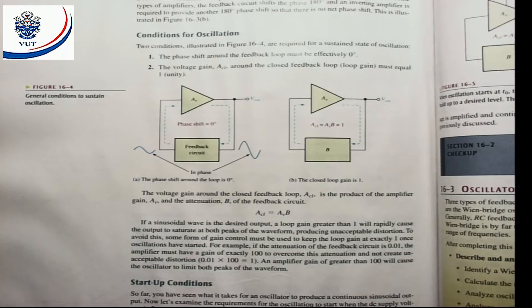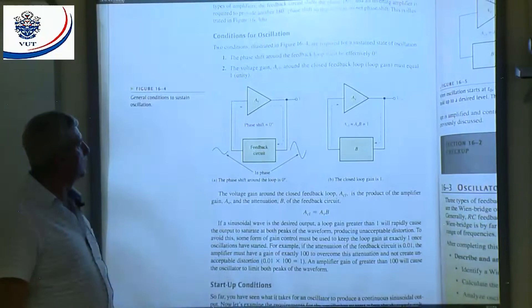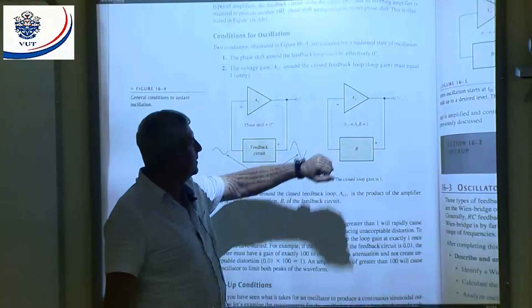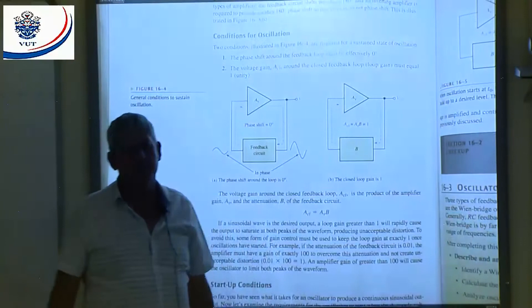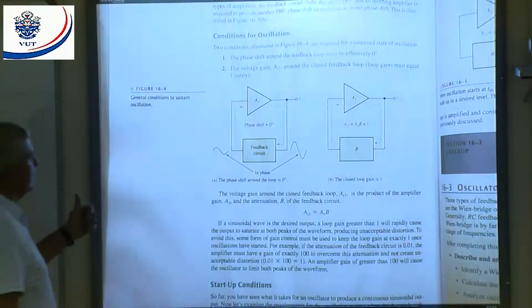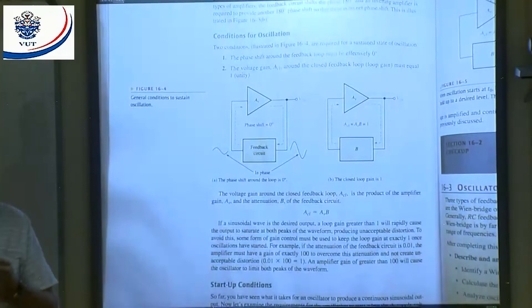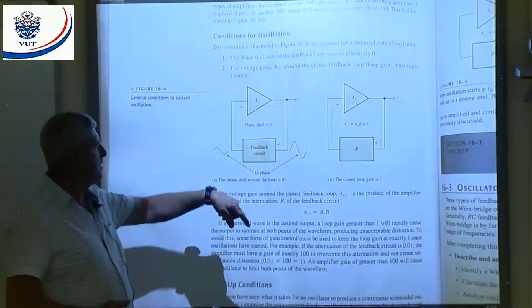The conditions for oscillation: first, the phase shift around the loop should be equal to 0 degrees — that gives positive feedback. Second, the closed-loop gain equals the gain of the amplifier times the attenuation (B), and that should be equal to 1. The gain of the amplifier multiplied by the attenuation should give me 1. Those are the two conditions: zero phase shift around the loop and closed-loop gain equal to 1.